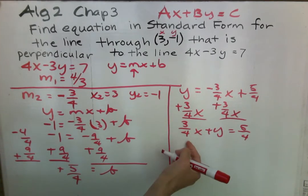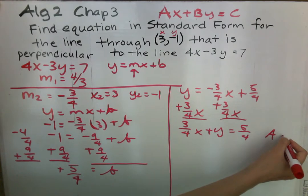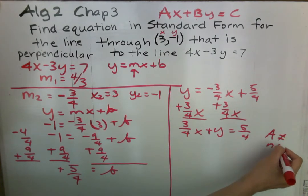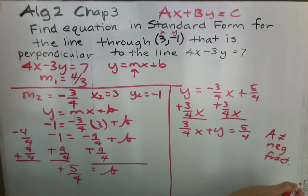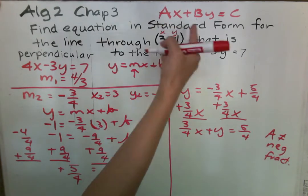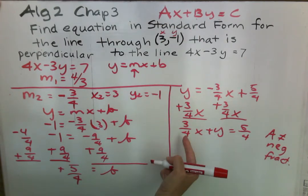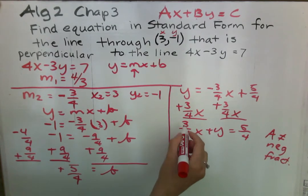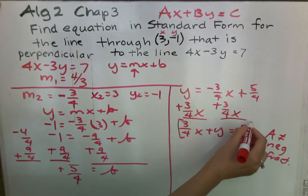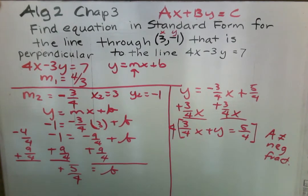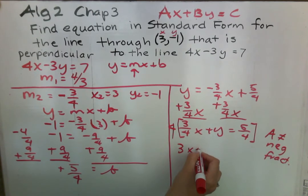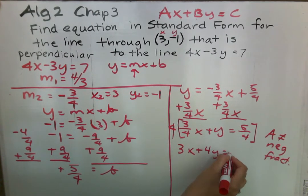Now remember, a cannot be negative and it cannot be a fraction because visually it's easier to see an equation without a fraction or a negative in the front. So we're going to multiply everything by 4 to get rid of the fraction. So we end up with 3x plus 4y equals 5.